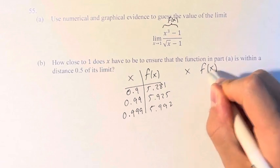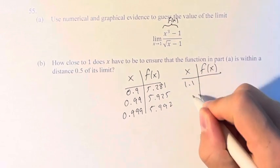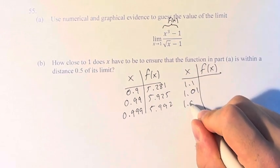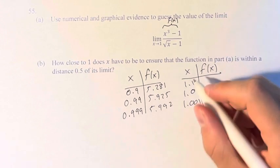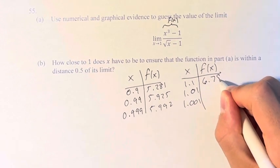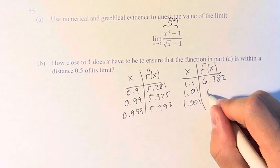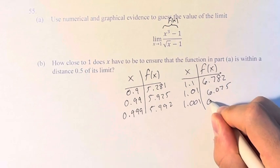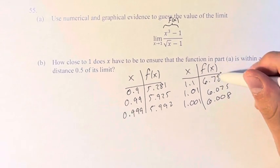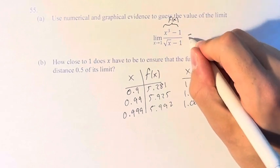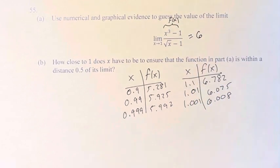Same thing if we approach 1 from the right, so 1.1, 1.01, 1.001. f of x goes 6.782, 6.075, 6.008. These numbers are getting closer and closer to 6. Therefore, we can see the value of the limit is equal to 6.